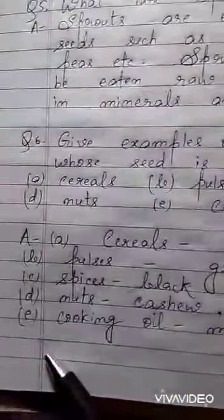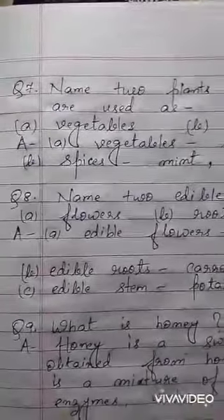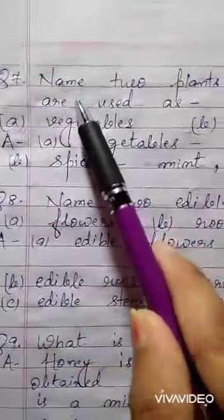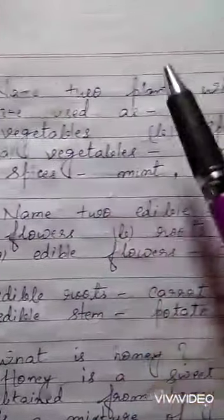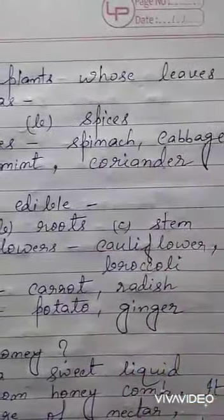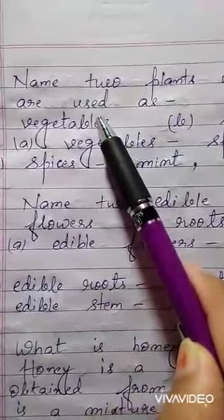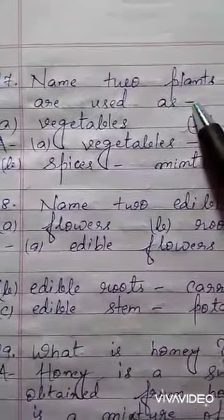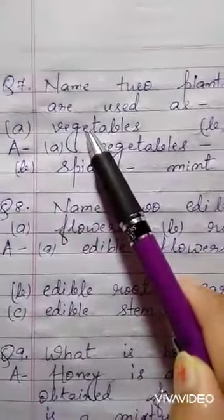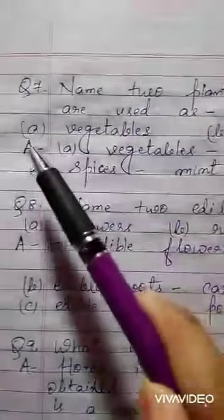Students, in the previous video I have given you up to question number 6. Now today I will give you question number 7. Write down question number 7: Name two plants whose leaves are used as — Point A: Vegetables. Point B: Spices. Write down the answer.